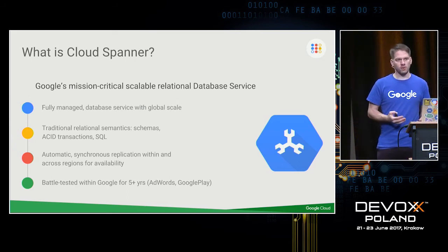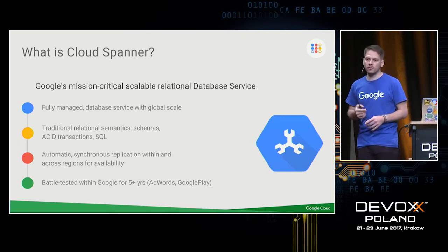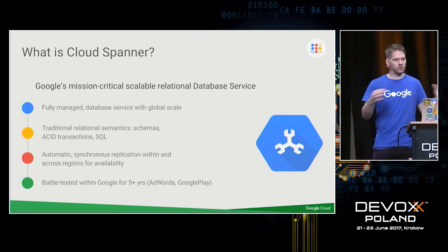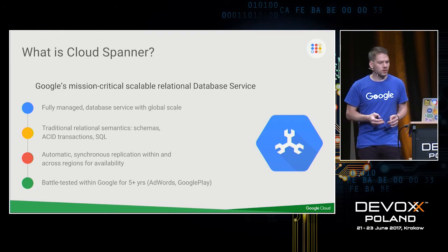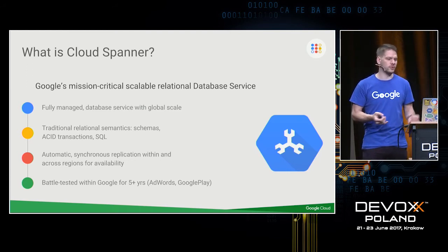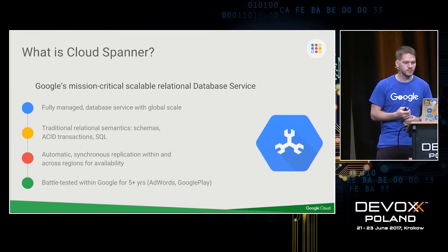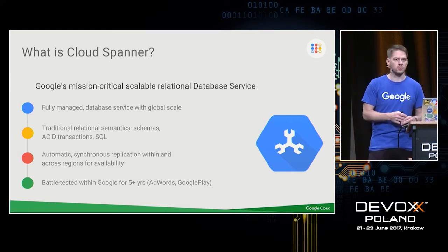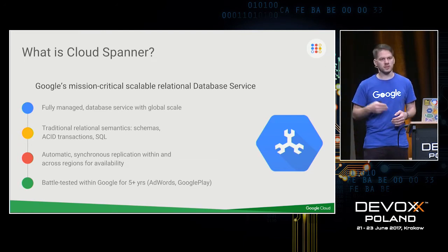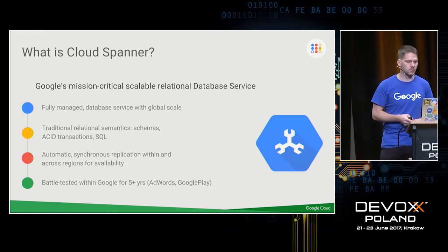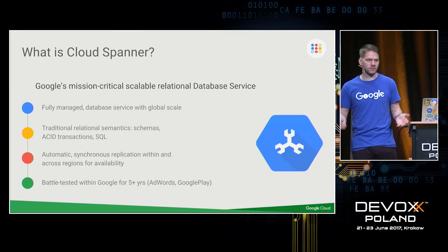To make Spanner available to everyone, we needed to do a few things. First, we wanted to offer it as a fully managed service, integrated with the Google Cloud Platform portfolio. We also wanted it to be easy to use — familiar from MySQL or Postgres — so it was very important that we support schemas, transactions, and SQL semantics. The system operates at global scale, meaning it can be replicated across continents, with synchronous or near-synchronous replication. And it's a system battle-tested within Google for almost ten years.